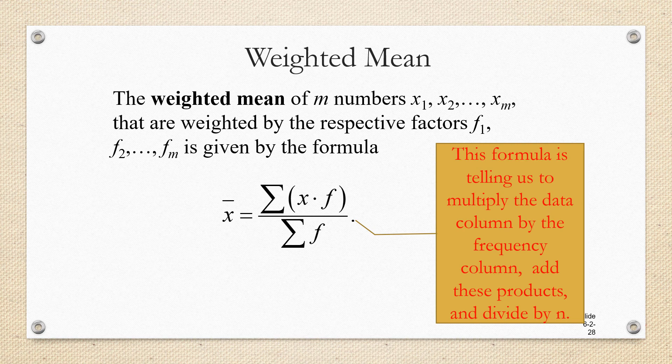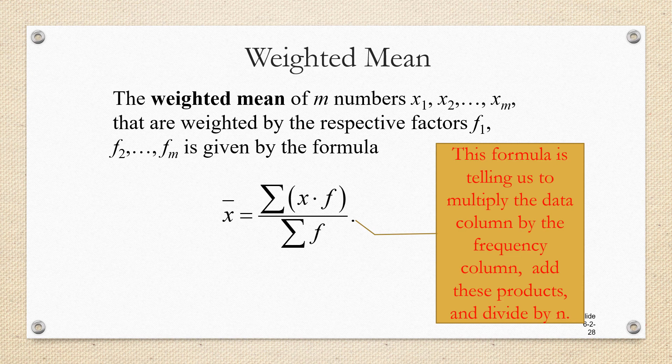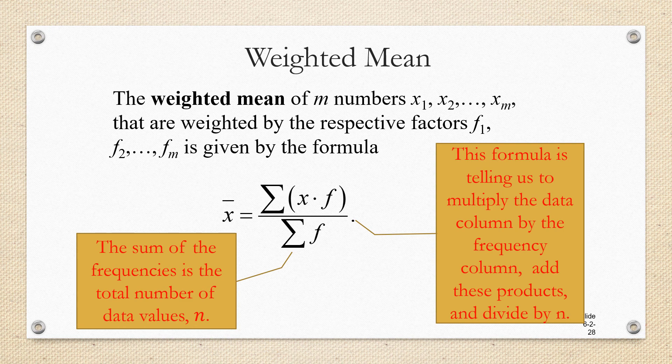This formula is telling us to multiply the data column by the frequency column, add these products, and divide by n. Remember, in statistics, formulas are telling us procedures. They're not quite the same as the type of formulas that we saw in algebra. Also remember, the reason why we're dividing by the sum of the frequencies is because the sum of the frequencies is just the number of data values n, and that's always true.